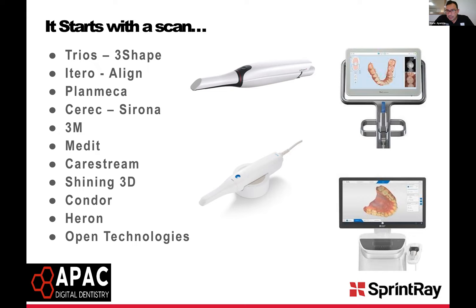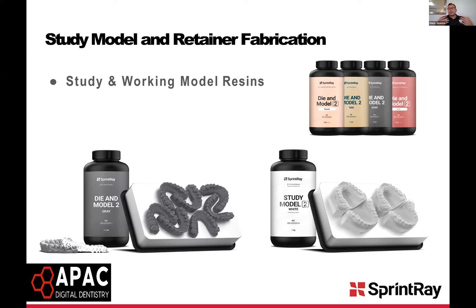The most popular scanners include the Trios from 3Shape, iTero, CEREC, Medit — which has made leaps and bounds from the i500 to the i700 — and Carestream. The biggest question I get is: what scanner should I buy under this price? It really depends on what you want to do in the future, not just now. I'd suggest considering your future plans before buying. I'll have my details at the end if you want to have a longer conversation.